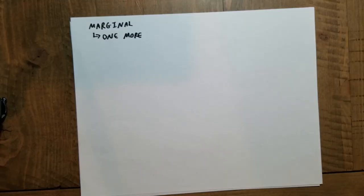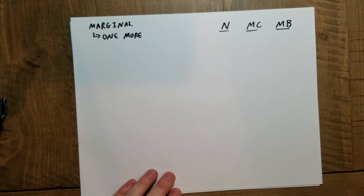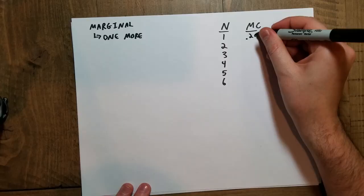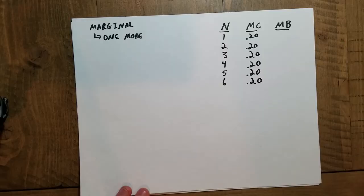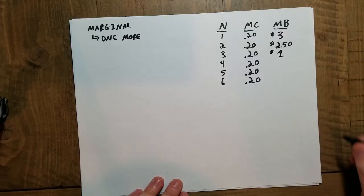So let's draw out a table. We have N — the number of jalapeños — the marginal cost of buying each one, and the marginal benefit of buying each one, for the first six jalapeños I could buy. In each case I'm buying from a store, so marginal cost stays the same: 20 cents for each one. But my marginal benefit is declining: $3.00 for the first, $2.50 for the second, $1.00 for the third, 50 cents for the fourth, 20 cents for the fifth, and 10 cents for the sixth. Note that marginal benefit is going down as quantity goes up — that's a key distinction between marginal and total benefit.